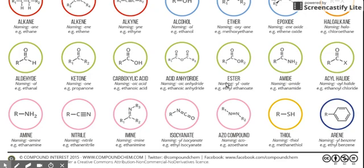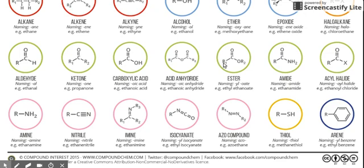Next is ester. Ester is related to carboxylic acid — you replace the H from carboxylic acid with another alkyl group, giving you C double bond O then O. For naming, ester ends in Y-L then O-A-T-E. Example: ethyl ethanoate. Ethyl is the group on one side, and ethanoate represents two carbon atoms attached to the O on the other side. So Y-L-O-A-T-E means that's an ester organic compound.